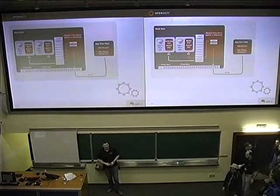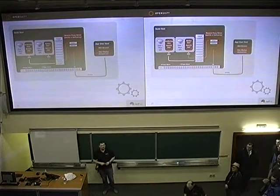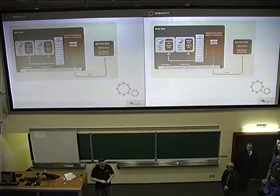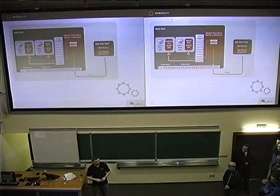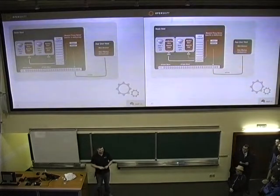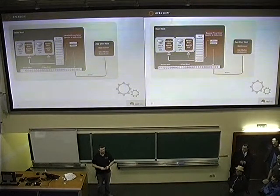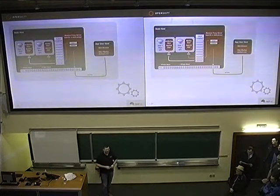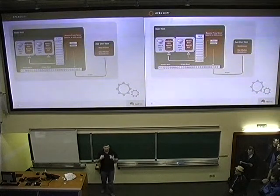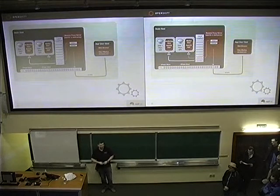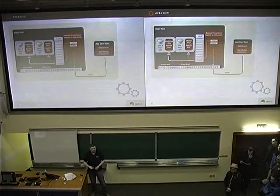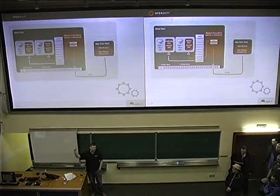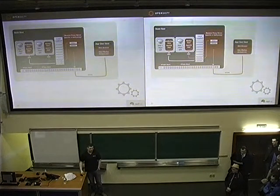We have about two or three minutes left, one more question. What we see from outside is whether connections are coming to the gear or not. If no connections are coming, the gear is idle — it doesn't need to be running. So we make it idle. Once a connection comes in, we spin the application back up and it answers the request. That's how idling works.